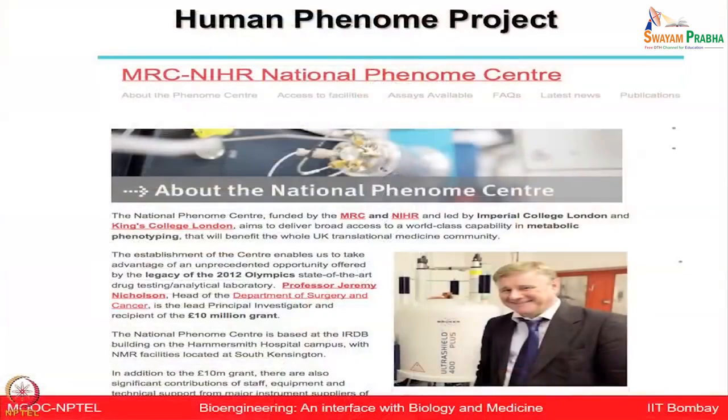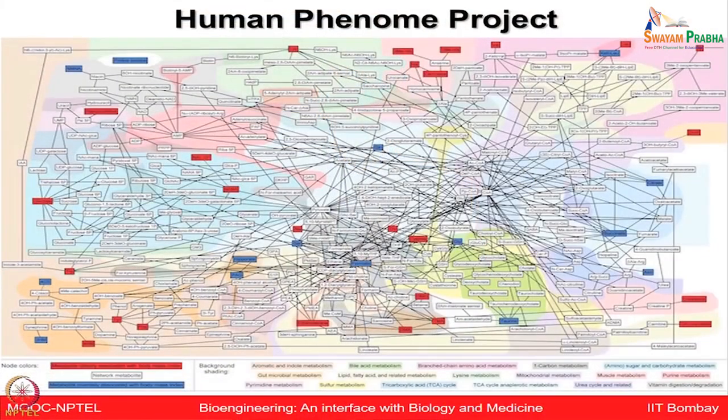Other mega projects aim to look at maximum molecular changes in a given individual and screen similar things in large populations. The Human Phenome Project in London profiles all metabolites in healthy and disease-affected populations to understand metabolic networks perturbed as healthy individuals acquire diseases. The National Phenome Centre is generating interesting publications explaining how we can understand human physiology and phenotypes using mass spectrometry and NMR-based technologies that provide big data.